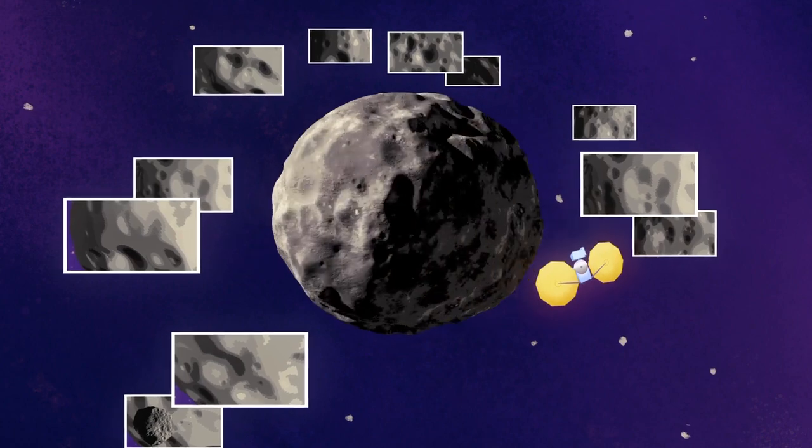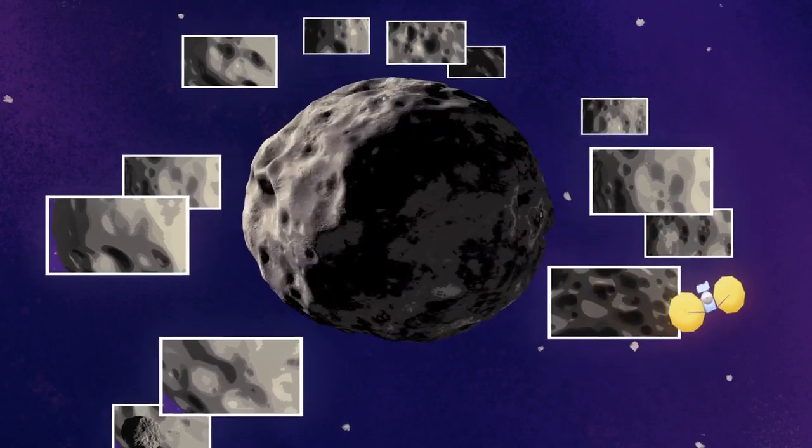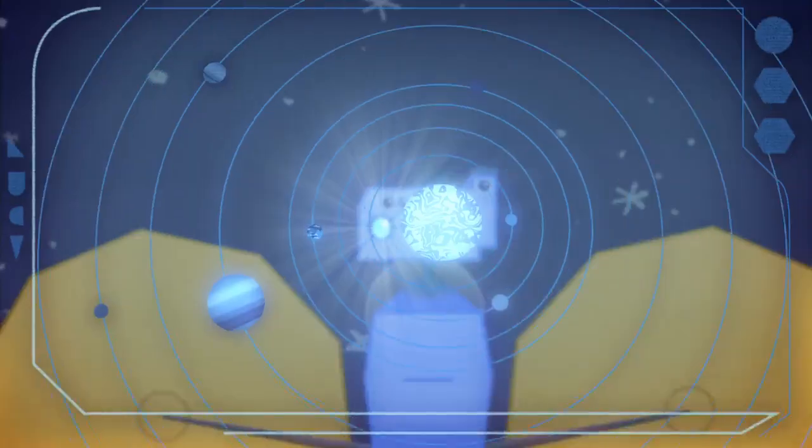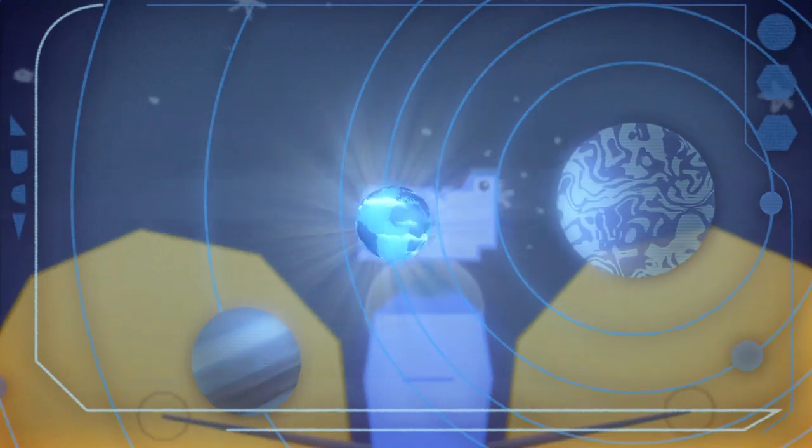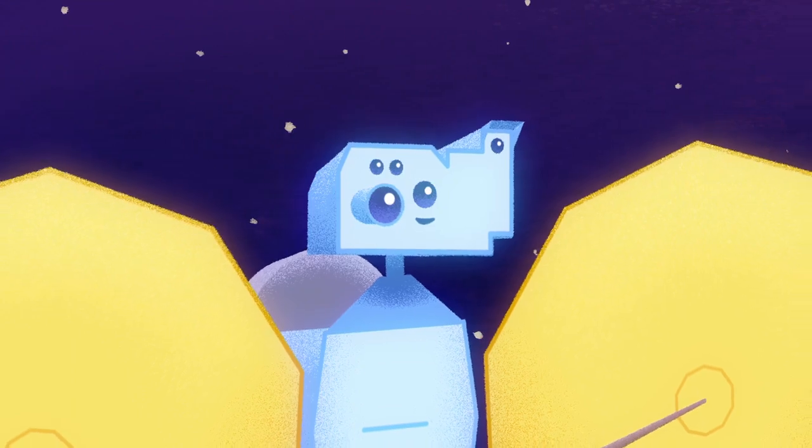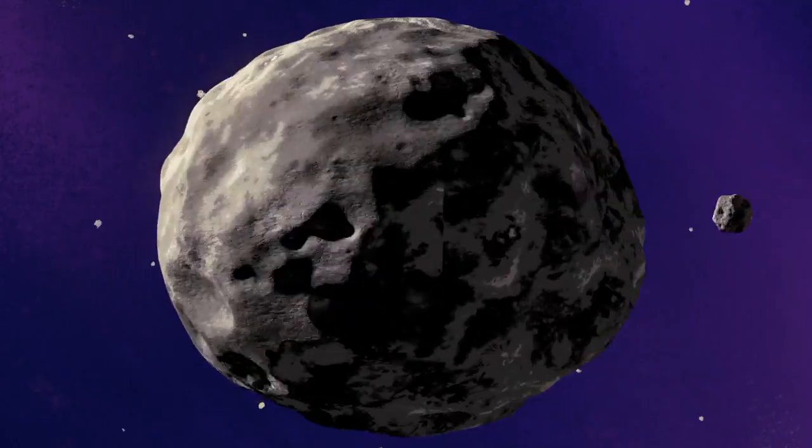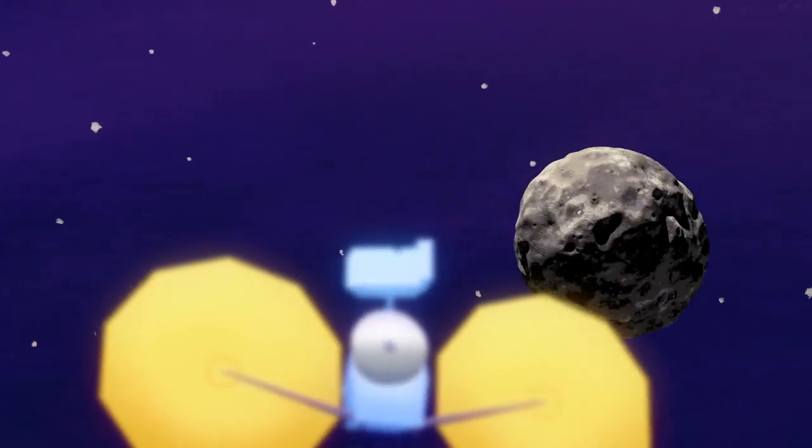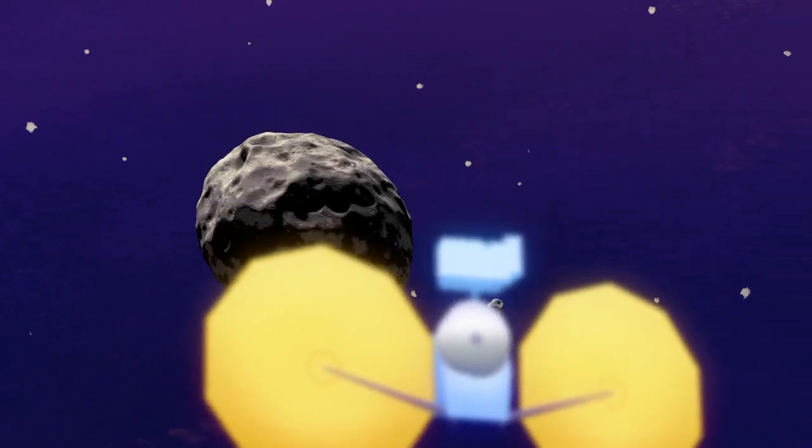Commands travel at the speed of light, and over the course of Lucy's trajectory, its position from Earth varies substantially. When Lucy is near Earth during gravity assists, it takes mere seconds for commands to be received. But at the farthest extent of Lucy's trajectory, it can take up to an hour for commands to be received, even traveling at the speed of light.